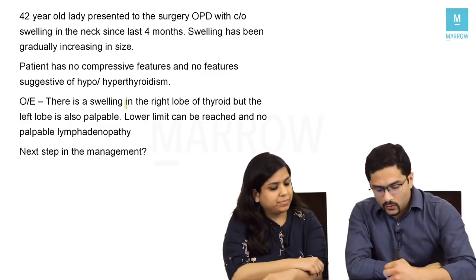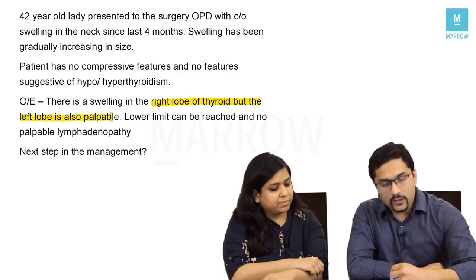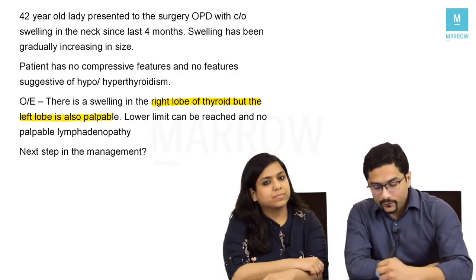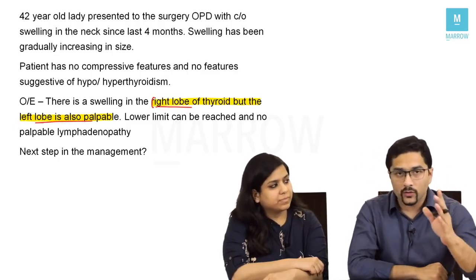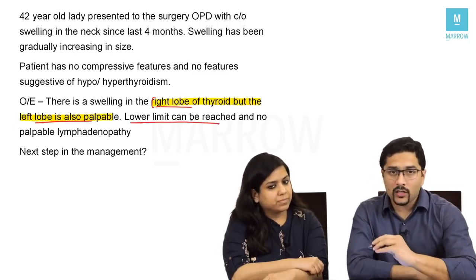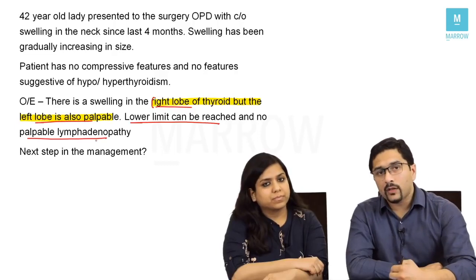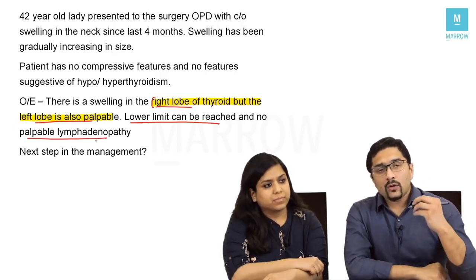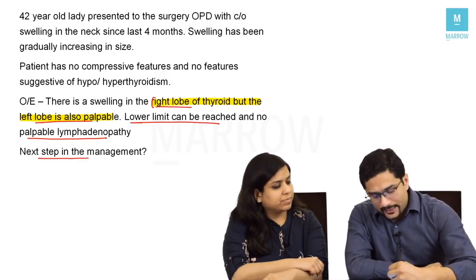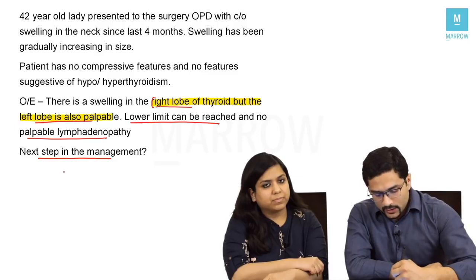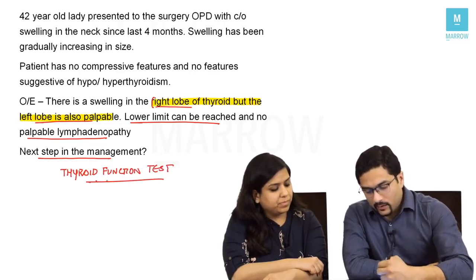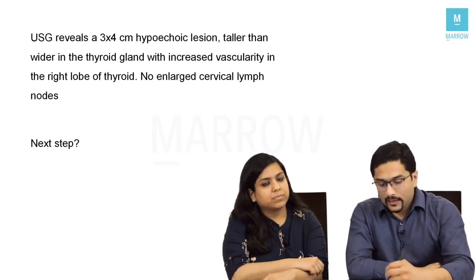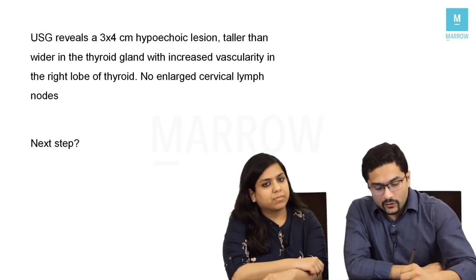After examination, we find the swelling is in the right lobe of the thyroid but the left lobe is also palpable. If one swelling is present and the other lobe is also palpable, it is no longer a solitary thyroid nodule. The lower limit can be reached, meaning it is not a retrosternal goiter, and there is no palpable lymphadenopathy. The next step is always a thyroid function test, after which — once we know the patient is euthyroid — we proceed with an ultrasound.